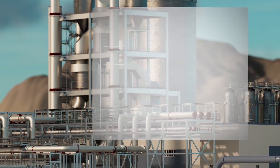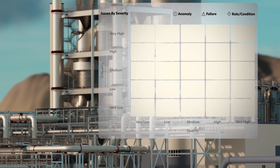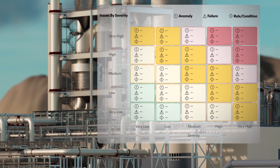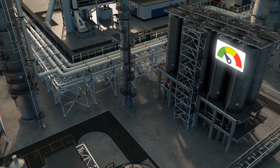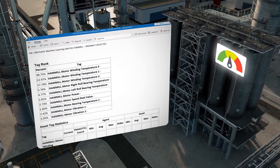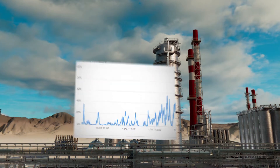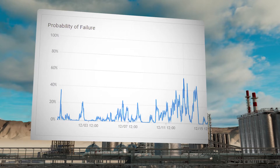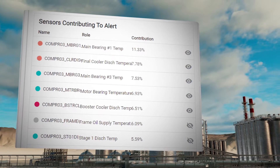Sorting by criticality, severity, and priority enables you to easily identify those issues needing immediate attention. For immediate notification, you receive an automated email when an alert is triggered.